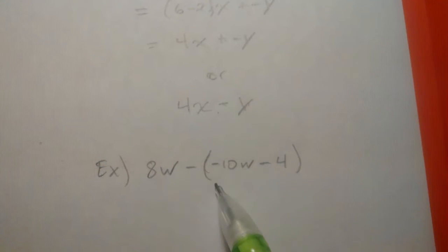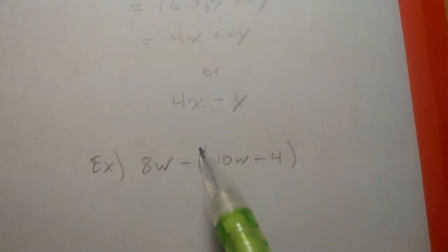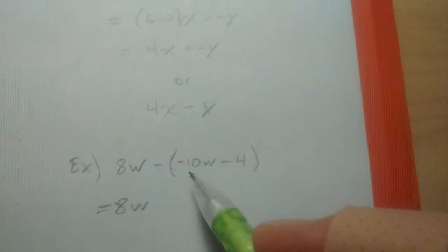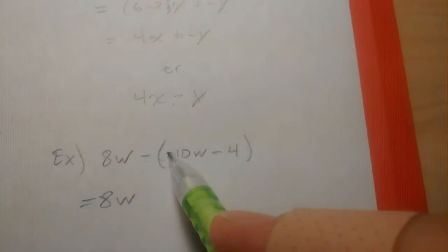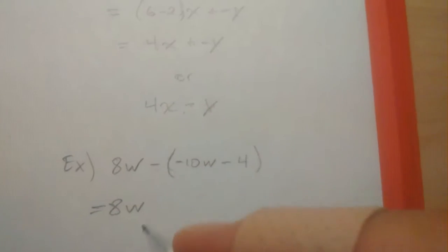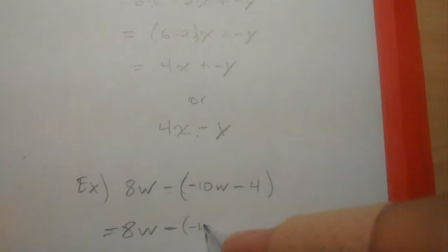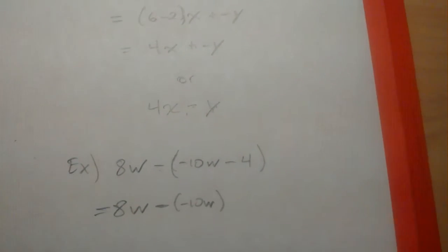We first must undo the parentheses by performing that operation right there. Let's take it straightforward. We are subtracting off negative 10w. That looks like this. That's the easy part to write.